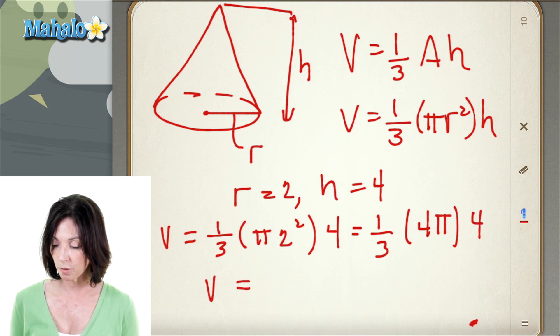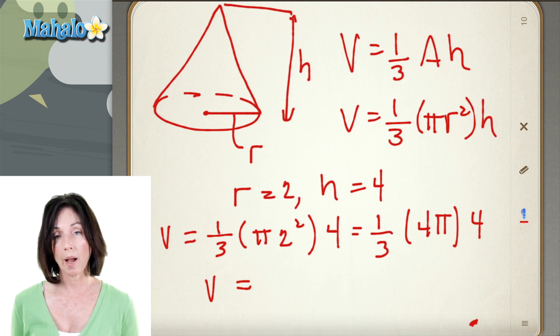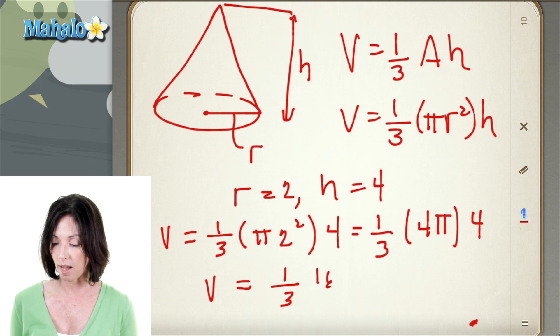So then I have my volume equal to, now 4 pi times 4 is 16 pi, so I have one-third times 16 pi, which I can just rewrite as 16 pi over 3.